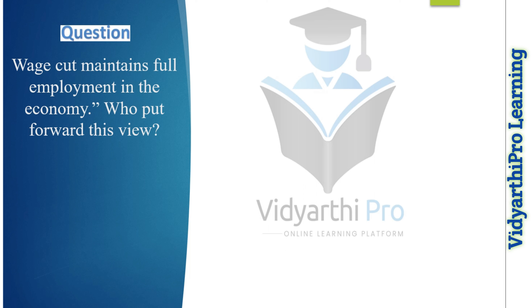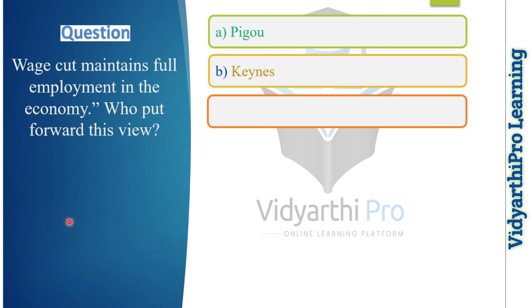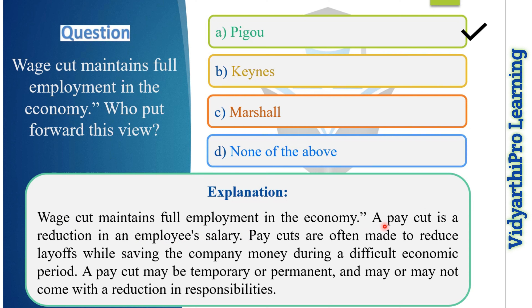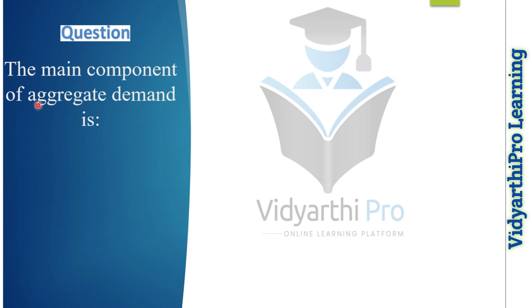Our next question: wage cut maintains full employment in the economy — who put forward this view? In Hindi: 'Wage may cut se arthvyavastha mein poorn rozgar bana rehta hai, yah drishti koon kisne rakha tha?' Option one: Pigou. Option two: Keynes. Option three: Marshall. Option four: none of the above. The correct answer is option A, Pigou. A pay cut is a reduction in an employee's salary; pay cuts are often made to reduce layoffs while saving the company money during difficult economic periods. This concept was given by economist Pigou.